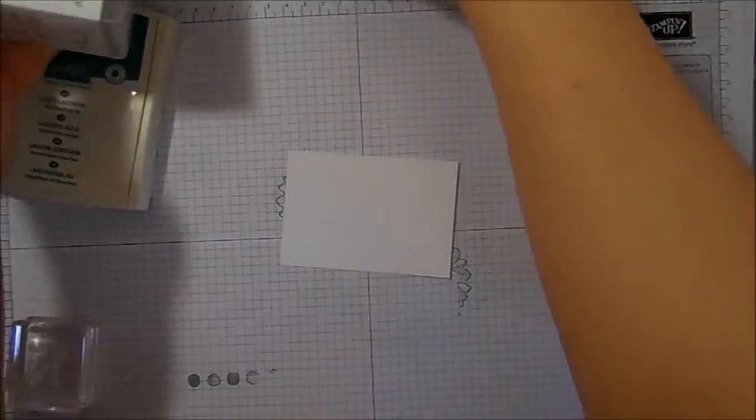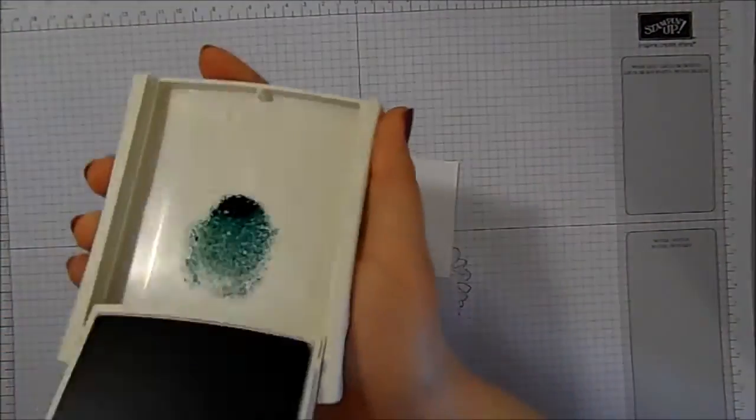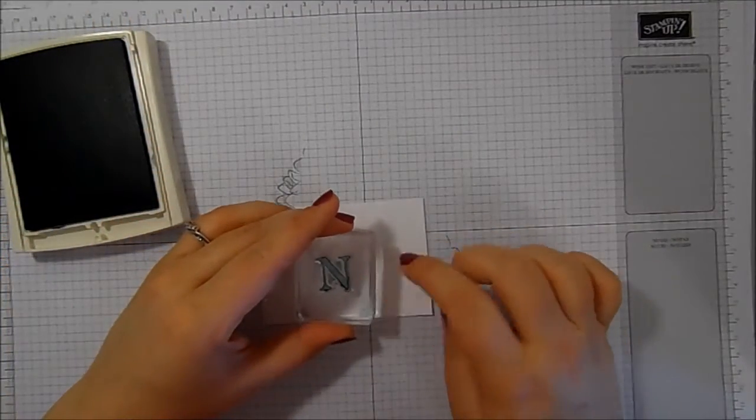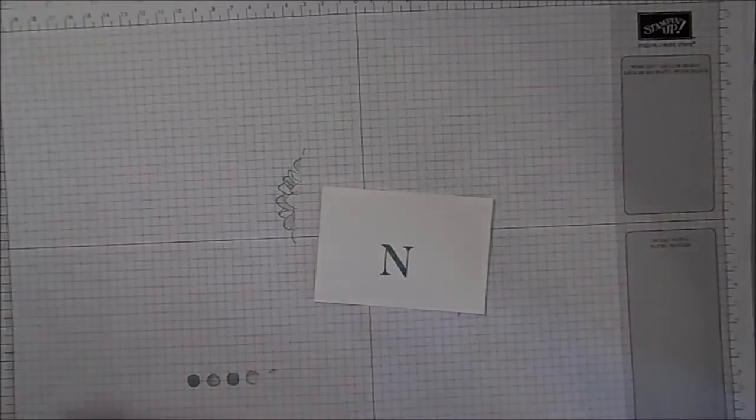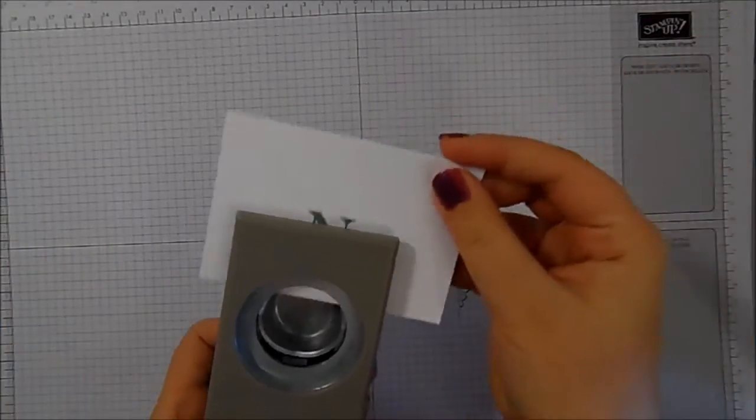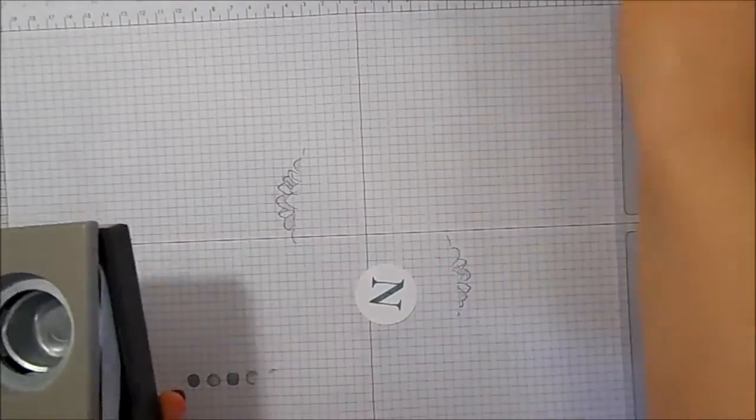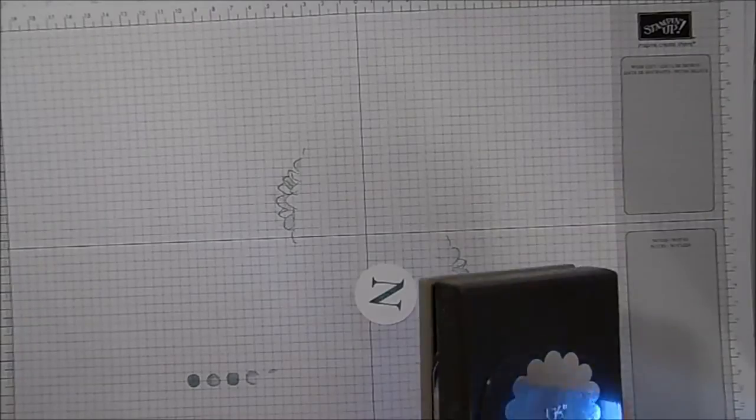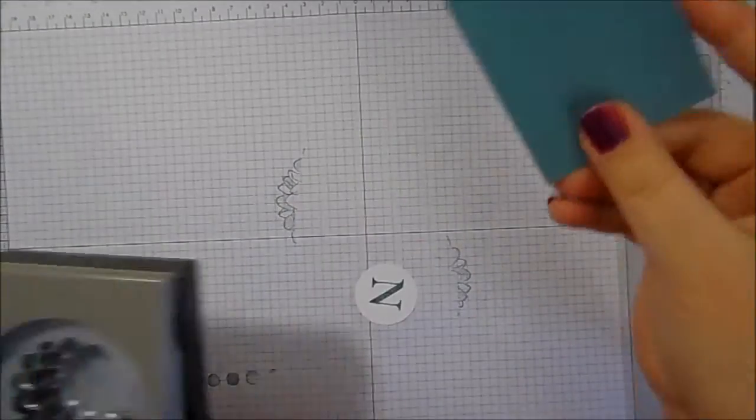So I have selected one of the letters from that stamp set and I've got my Lost Lagoon. I'm just going to stamp in the middle. And then I've got my one and three-eighths circle punch around that letter. And I've got my one and three quarter inch scallop circle punch and a piece of scrap Lost Lagoon.